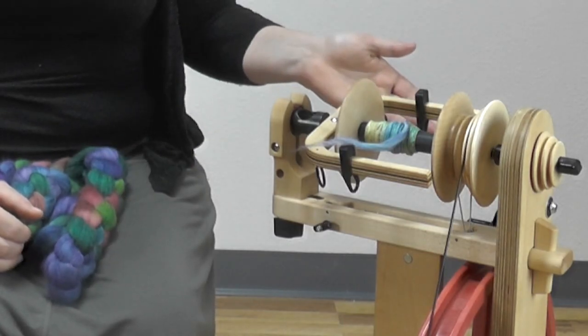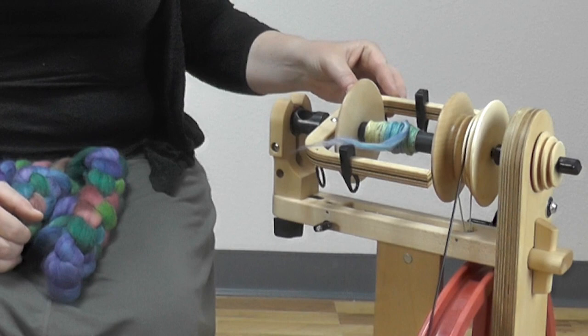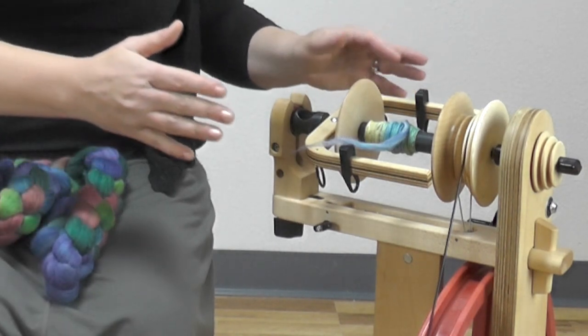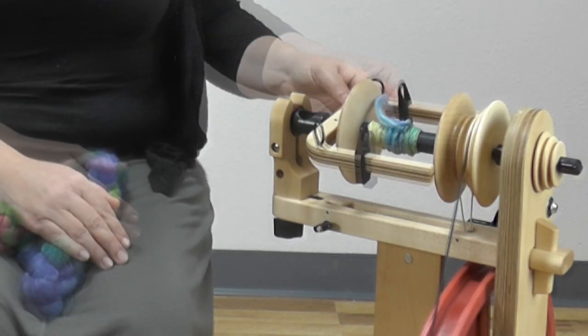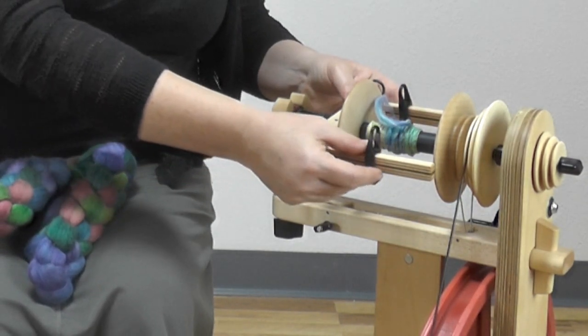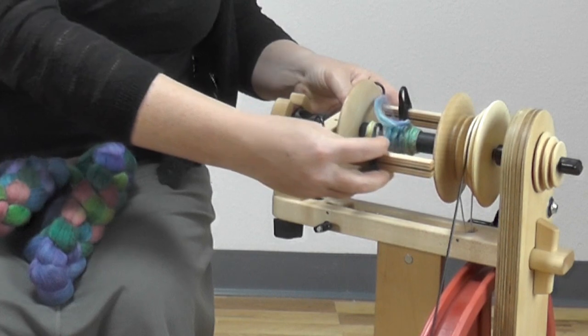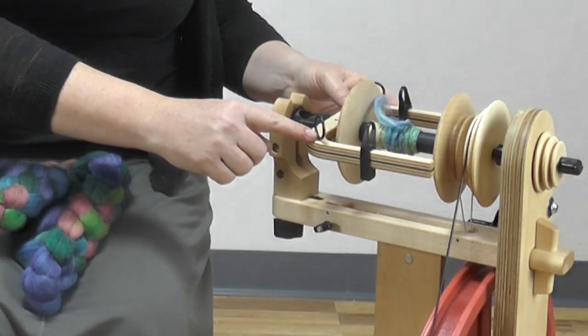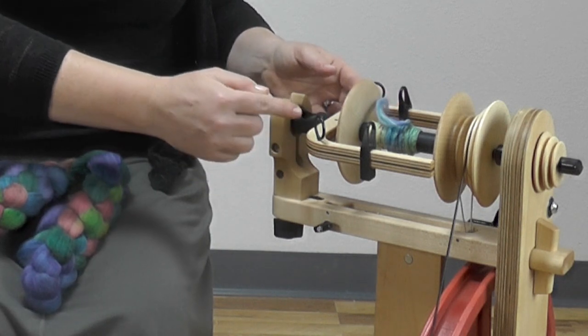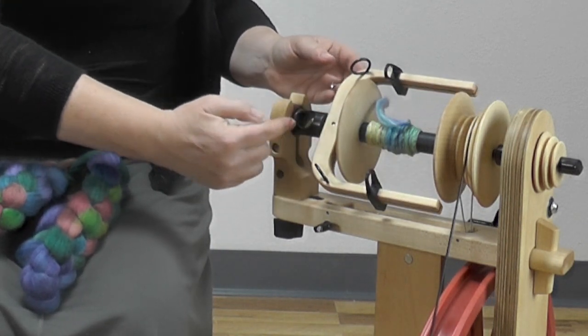I set up the ladybug spinning wheel with the bulky flier and flyer. The bulky flier and flyer has some advantages when you are spinning a thick and thin yarn. One advantage is it has sliding hooks that move along the arm of the flyer. It also has very large hooks here to guide your yarn through the very large orifice.